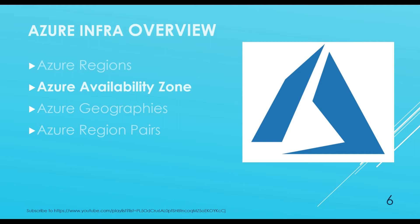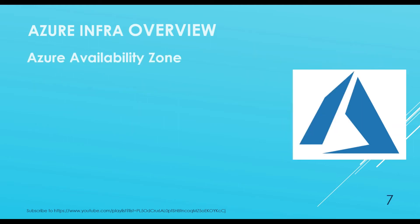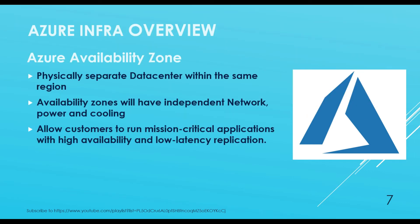Availability zones are physically separated locations within an Azure region. Each availability zone is made up of one or more data centers equipped with independent power, cooling, and networking. Azure allows customers to run mission-critical applications with high availability and low-latency replication.